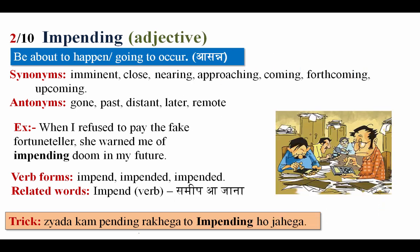The next word is impending, meaning about to happen, going to occur. Synonyms: imminent, close, nearing, coming, forthcoming. Antonyms: gone, past, distant, later, remote. Example: When I refused to pay the fake fortune teller, she warned me of impending doom in my future. Word forms: impended, impending. The related word is impendingly.